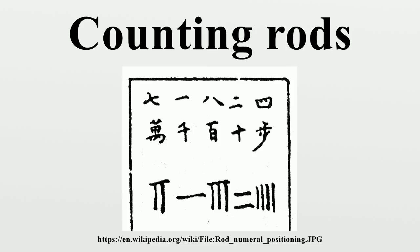Rod numerals are a positional numeral system made from shapes of counting rods. Positive numbers are written as they are, and negative numbers are written with a slash bar at the last digit. The vertical bar in the horizontal form for 6 to 9 are drawn shorter to have the same character height. A circle is used for zero. Many historians think it was imported from Indian numerals by Gautama Siddhar in 718, but some think it was created from the Chinese text space filler, and others think the Indians acquired it from China because it resembles a Confucian philosophical symbol for nothing. In the 13th century, Southern Song mathematicians changed digits for 4, 5, and 9 to reduce strokes, and the new horizontal forms eventually transformed into Suzhou numerals. Japanese continued to use the traditional forms.